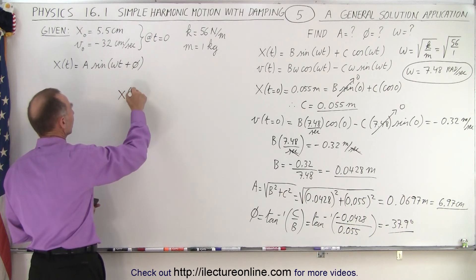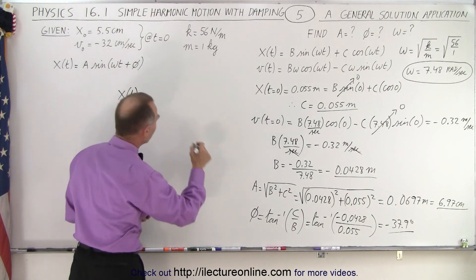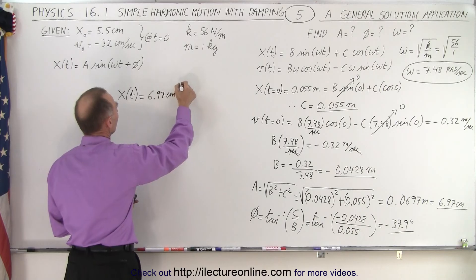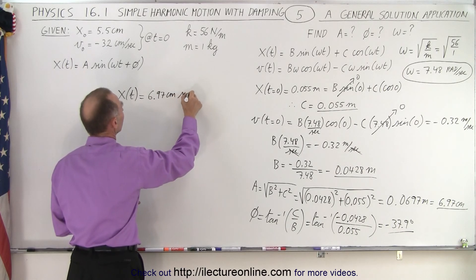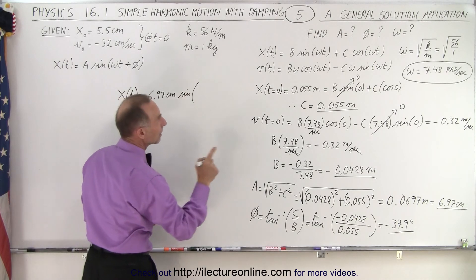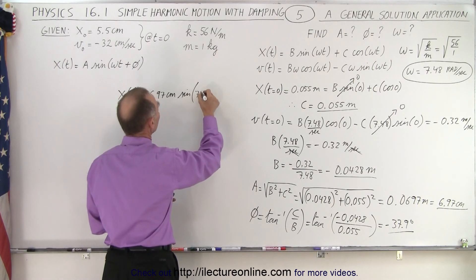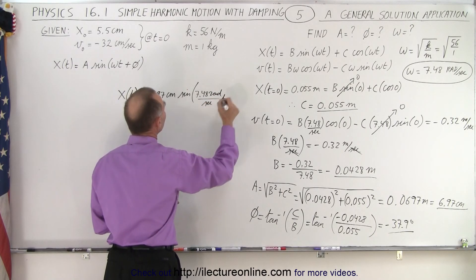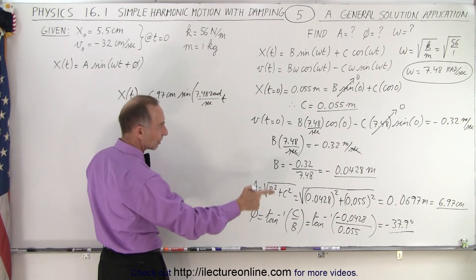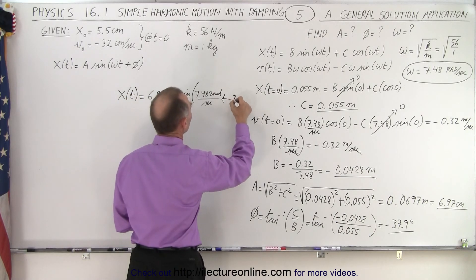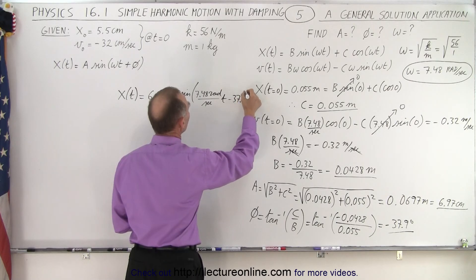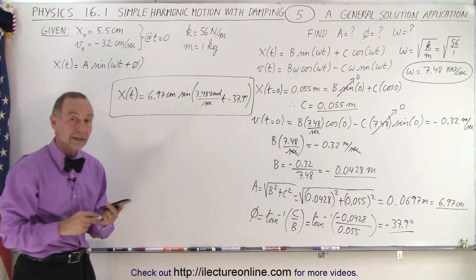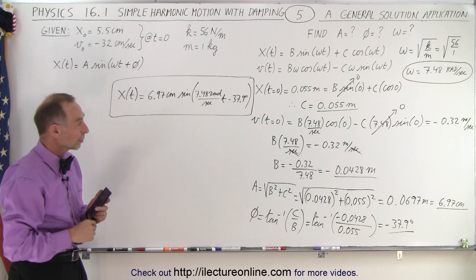So now we can plug that in. Now we have x as a function of time equal to the amplitude, which is 6.97 centimeters, multiply times the sine of omega t, omega is 7.48 radians per second times time, plus the phase angle, which is minus 37.9 degrees. And there is the final solution with those particular given numbers.